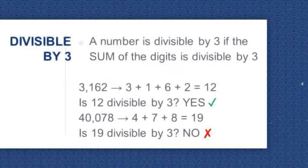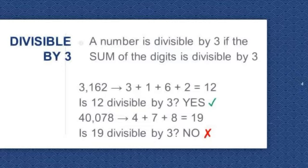Divisible by 3. A number is divisible by 3 if the sum of the digits is divisible by 3. Let's try 3,162. 3 plus 1 plus 6 plus 2 is equal to 12. Is 12 divisible by 3? Yes. So 3,162 is divisible by 3.